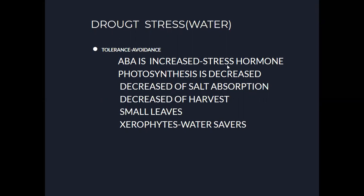Abscisic acid is also called stress hormone. When water is not sufficient in the soil, abscisic acid levels increase. At high concentration, the stress hormone decreases photosynthesis, decreases salt absorption, and decreases harvest. Broad leaves on the plant body are lost, and small leaves are developed instead. These steps naturally help in tolerance or avoidance of drought conditions.